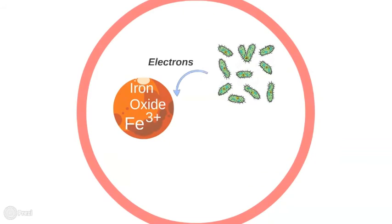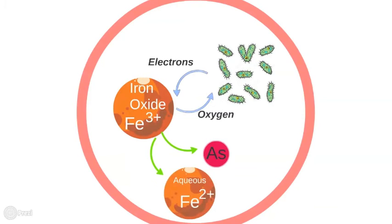Microorganisms can also use ferric oxide during the oxidation of organic matter. In this process, solid ferric iron is reduced to soluble ferrous iron, and the result is the release of mobile arsenic into natural ecosystems.